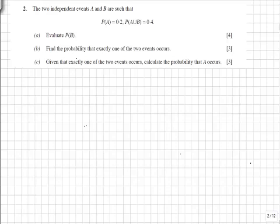If we say that exactly one of the two events occurs, we'll call that event B, and the probability that A occurs, we'll call event A.